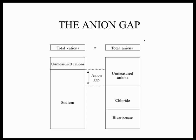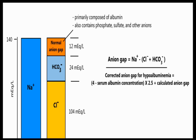By the law of electroneutrality, total cations equal total anions. In a clinical scenario, we have some unmeasured cations and unmeasured anions. We routinely measure sodium and potassium as cations, and chloride and bicarbonate as anions. But when we see the difference, there is always a gap — that is called the anion gap.